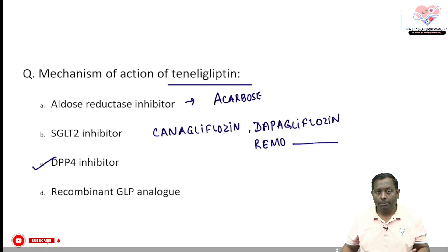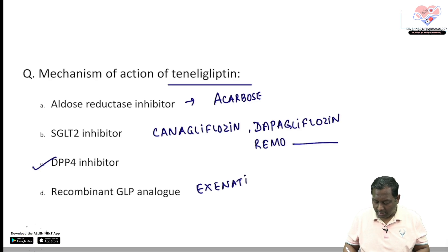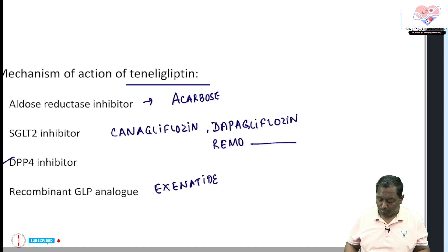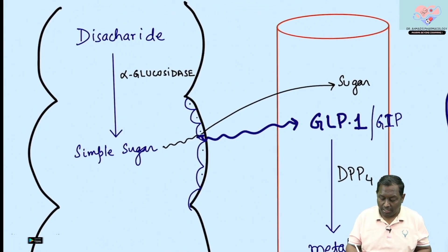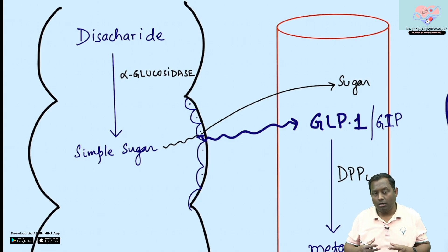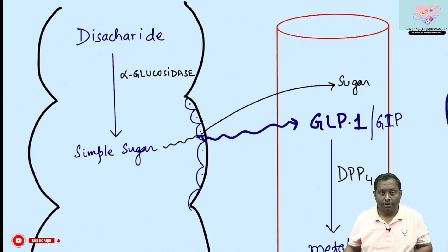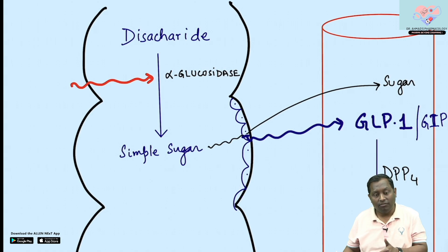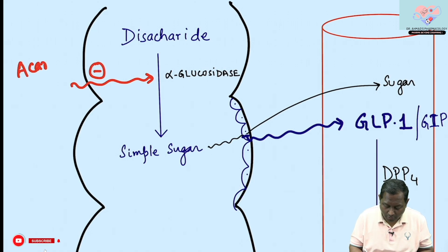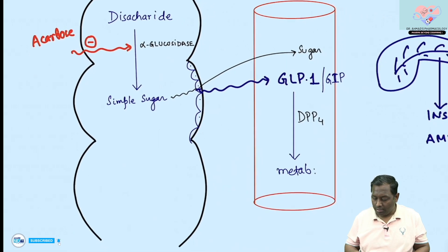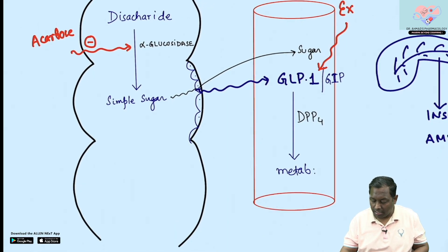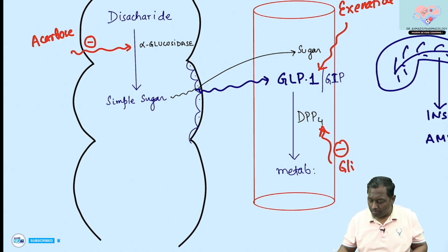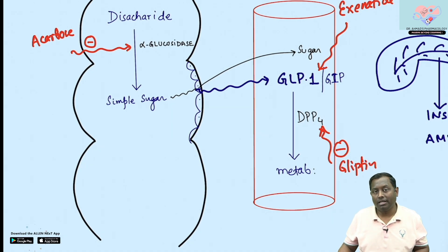Under recombinant GLP-1 analogues, we have exenatide, lixisenatide, and liraglutide. When we take complex sugars, we need to break them down into simple sugars using alpha-glucosidase; drugs that inhibit this are alpha-glucosidase inhibitors — acarbose, voglibose, miglitol. All the gliptins — sitagliptin, saxagliptin, alogliptin, linagliptin, vildagliptin — are DPP4 inhibitors.